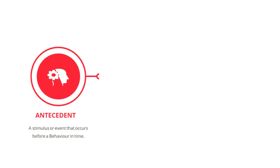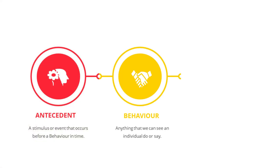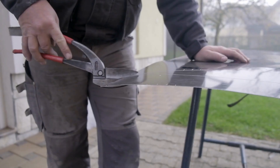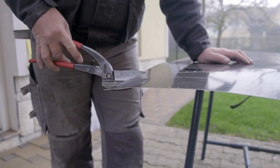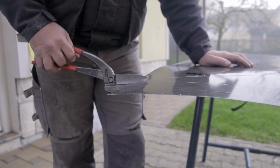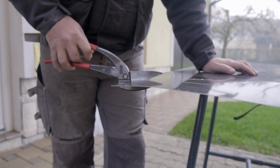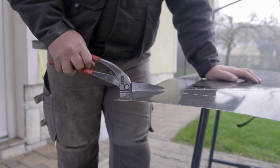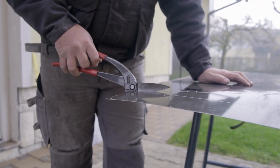Next is the B — Behavior. This is the action taken by the individual in response to the antecedent. In our scenario, Alex skipping his safety gear — that is, safety gloves — is the behavior.